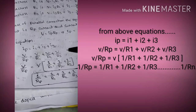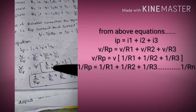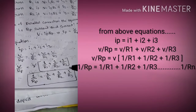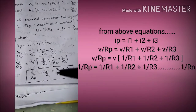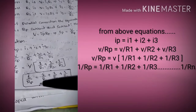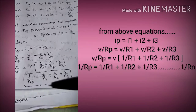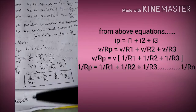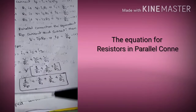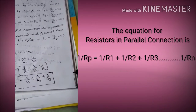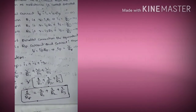Since V is common on both sides, we cancel it. This gives the result: 1/Rp = 1/R1 + 1/R2 + 1/R3. In a parallel connection, the equivalent resistance is the sum of the reciprocals of the individual resistances, which means the total resistance decreases. For n resistors in parallel: 1/Rp = 1/R1 + 1/R2 + 1/R3 + ... + 1/Rn.